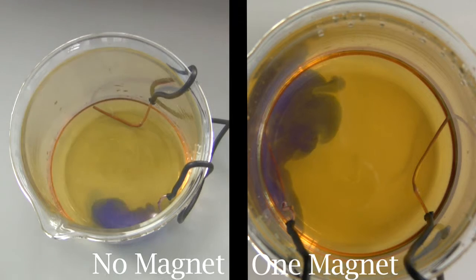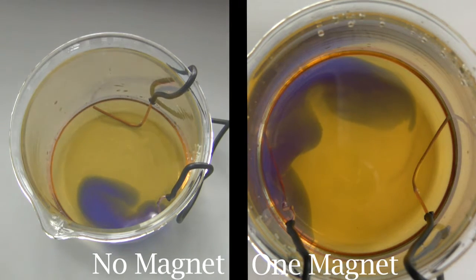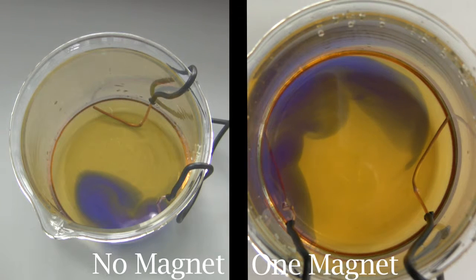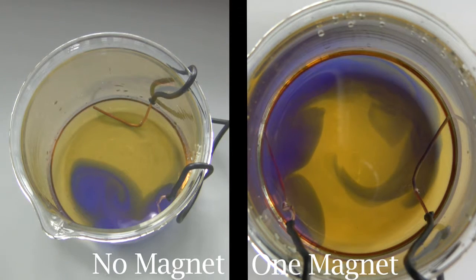Here we see two solutions of potassium chloride with current flowing through them. One has a magnet underneath, the other does not. The indicator thymol blue has been added to show the motion of the solution.